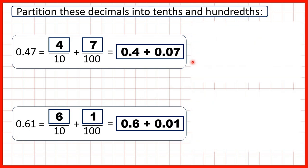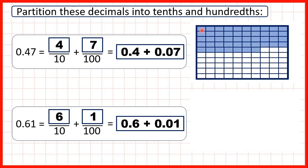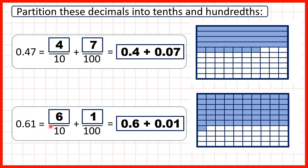We can show what we did here. For the first question we had 0.47, so that's forty-seven hundredths, but forty-seven hundredths is the same as four tenths plus seven hundredths, or 0.4 plus 0.07. Then we had 0.61, or sixty-one hundredths, but that's the same as six tenths and one hundredth.